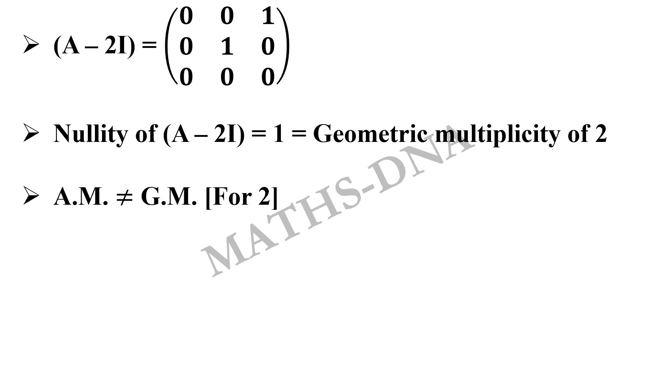So here our algebraic multiplicity of 2 is not equal to geometric multiplicity of 2. For a matrix to be diagonalizable, I repeat again that the algebraic multiplicity should be equal to the geometric multiplicity for each and every eigenvalue. Here, they are not equal for 2. So the given matrix is not diagonalizable. We can easily tick option A and move on to the next question.